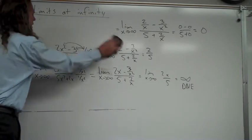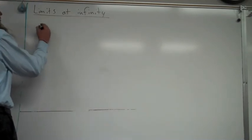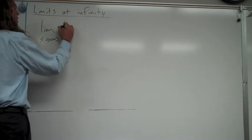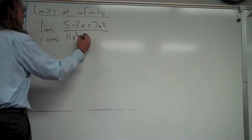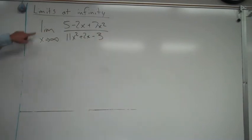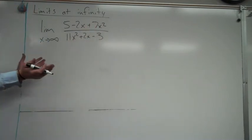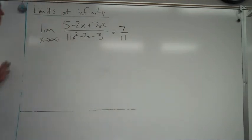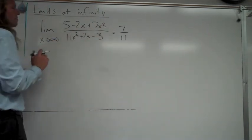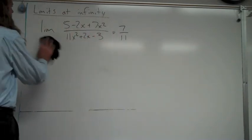You don't have to go through the lengthy multiplication process every time. For the limit as x approaches infinity of 5 minus 2x plus 7x squared over 11x squared plus 2x minus 3, just find the highest exponent on top — x squared — and the highest on the bottom — x squared. They're the same, so look at the ratio of those leading coefficients: 7 over 11. That's the answer. It's very quick and easy, and it works every time done correctly.